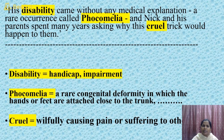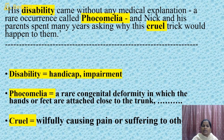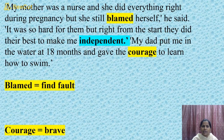Nick and his parents spent many years asking why this cruel trick would happen to them. Not only Nick — he was depressed — but both his parents were troubled all the time. The question went on in their minds: why did such a condition occur for their child? 'Cruel' means willfully causing pain or suffering to others. Why did God willfully create such pain in their lives? Any parent would get that question.